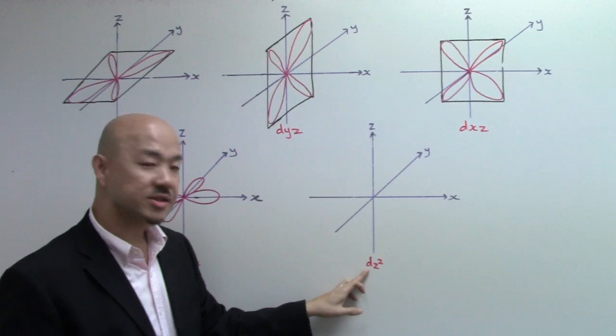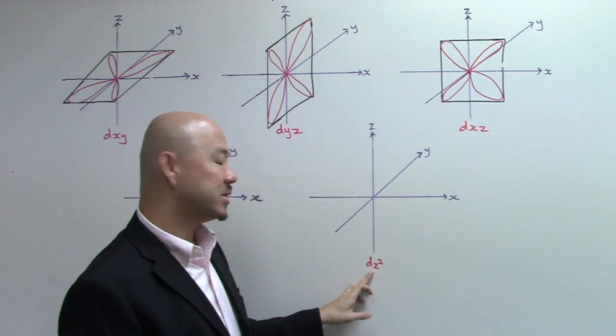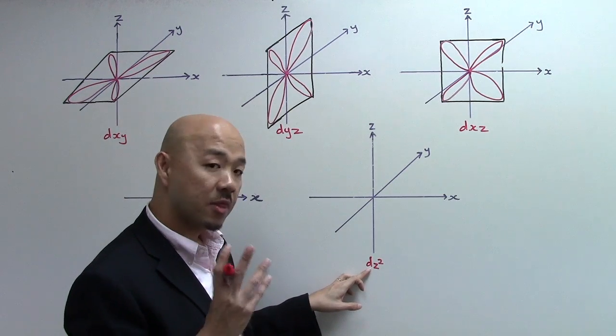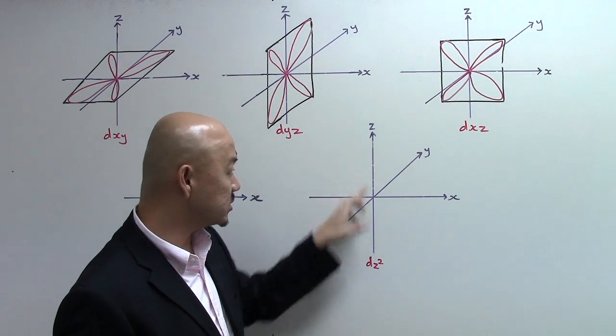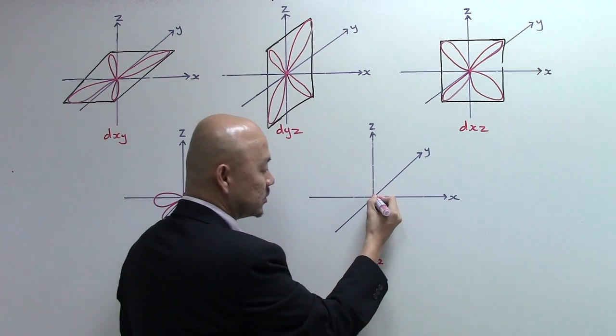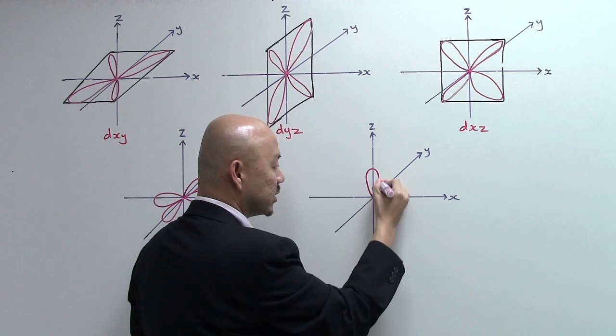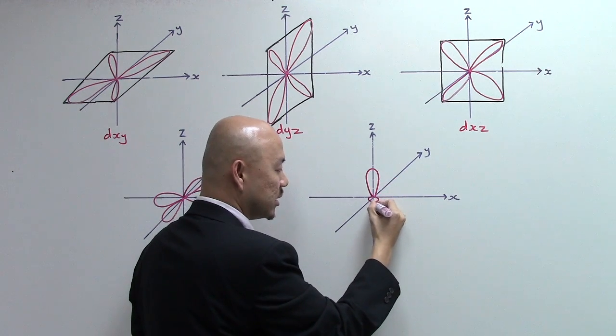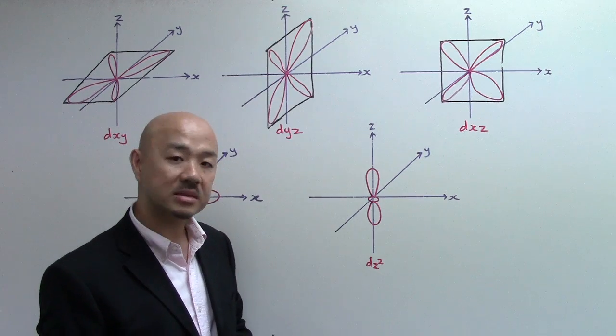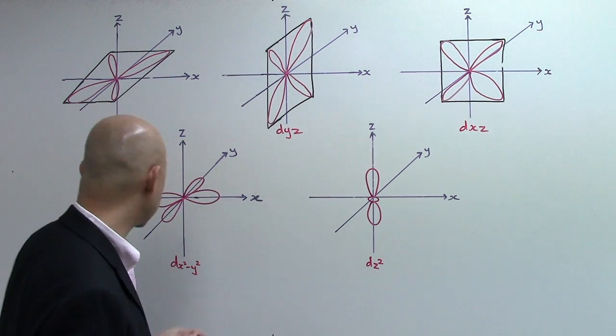For DZ², it's even easier, but some people find it confusing. It's because the orbital will be aligned along the Z axis. We call it a dumbbell with a collar. So there is a dumbbell over here, but there is a collar, and then this is the part of the dumbbell.